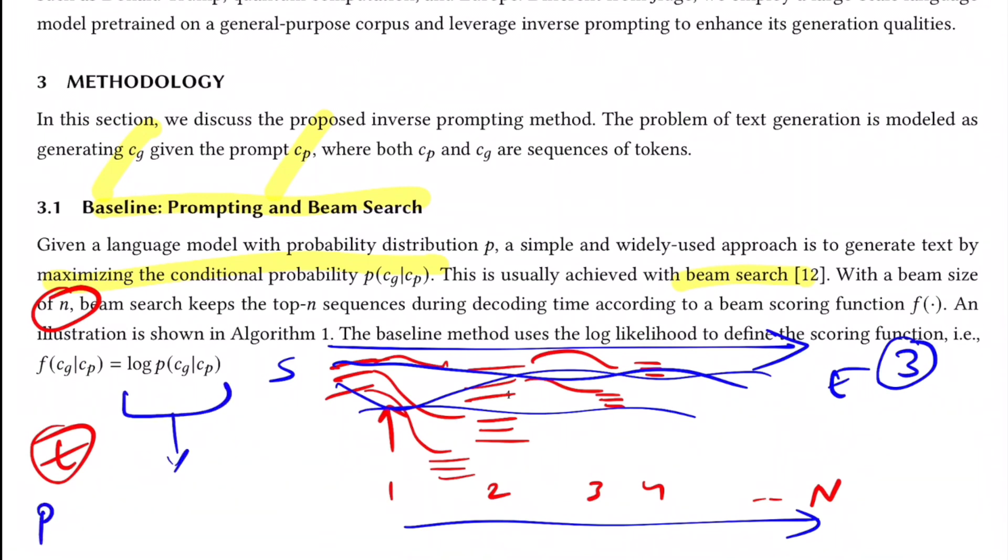So this unfolds like you have probability of the first word given the prompt, multiplied by probability of the second word given prompt and first word, and so on, till probability of the last word given w one to w of l minus one words. Since they have taken a log, you can convert this into a summation. This is a typical way of how you generate text given a prompt using a pre-trained language model. This is one of the methods they use for baseline.